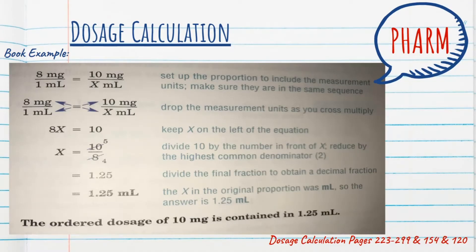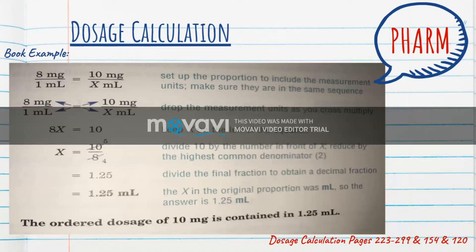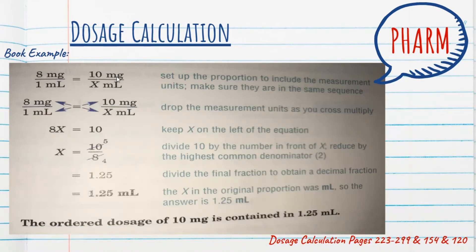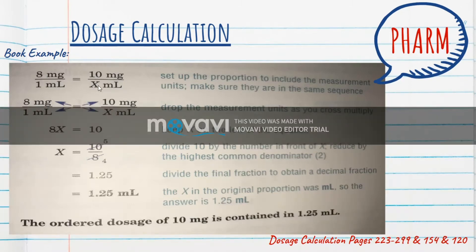So this is an example from the book. We have a package that says we have 8 milligrams in 1 mL, but our order says that we need 10 milligrams. So we set that up as 8 milligrams over 1 mL and 10 milligrams over x mL because we need to know how many mL do we give for 10 milligrams. So this is showing that we cross multiply and divide.